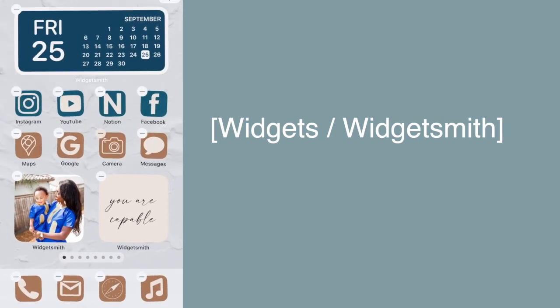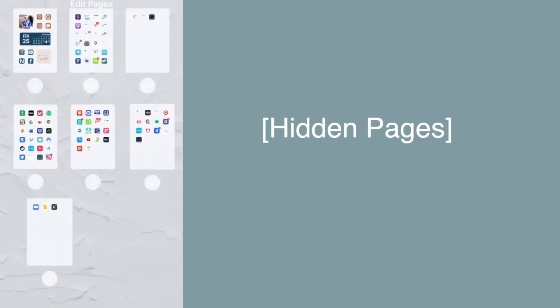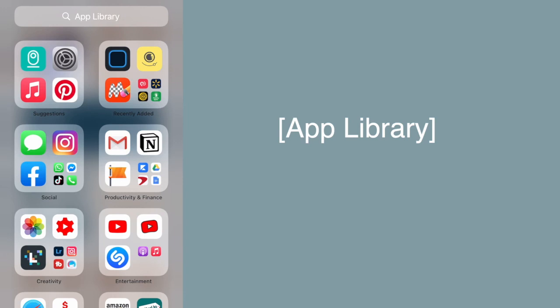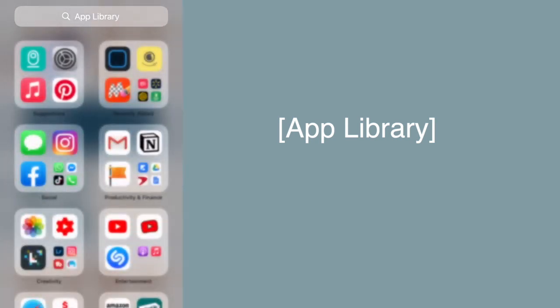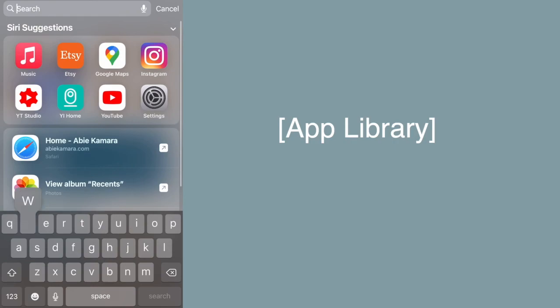If you don't want your other unorganized pages showing, do a long press on the home screen, select the dots at the bottom, and uncheck the pages you don't want to show — they'll be hidden. One other feature is the App Library: once you've hidden those pages, slide to the right and you'll see all your apps there, searchable or listed alphabetically on the side.